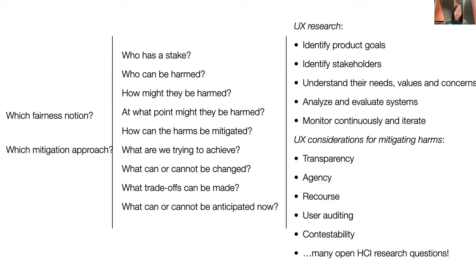Another point I want to briefly touch on is that mitigating harm is not just mitigating biases in a model, but can be achieved by many design solutions, such as providing transparency, supporting user agency, providing paths for recourse, as well as auditing and contesting the AI. This part of design-oriented harm mitigation strategy is still very much an open space for rich HCI research opportunities.